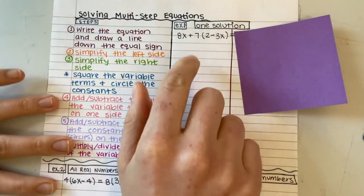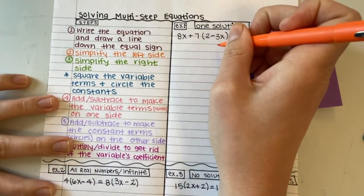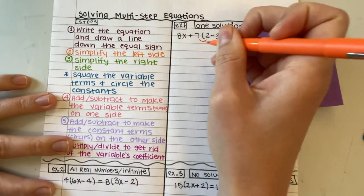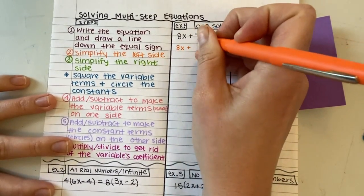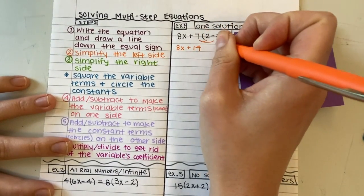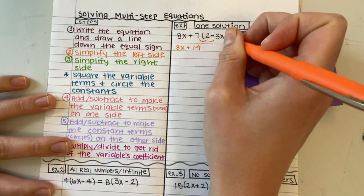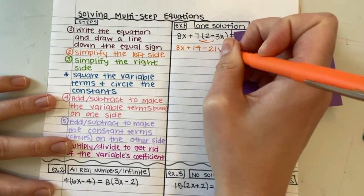So I'm only looking at this left side. I can simplify using the distributive property first. I'm going to bring down this 8x. I do 7 times 2 and I get 14. I also need to do 7 times negative 3x, and I'm going to get negative 21x.